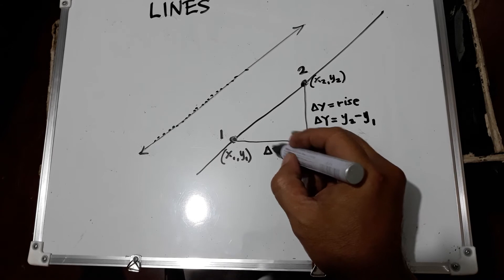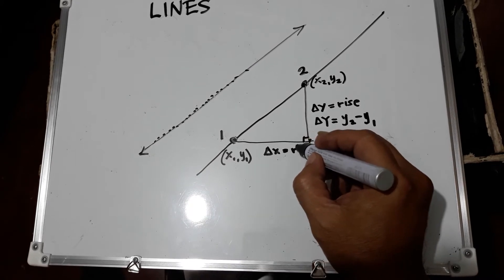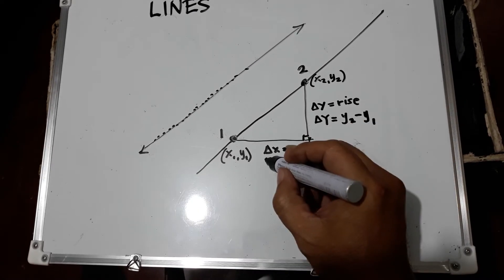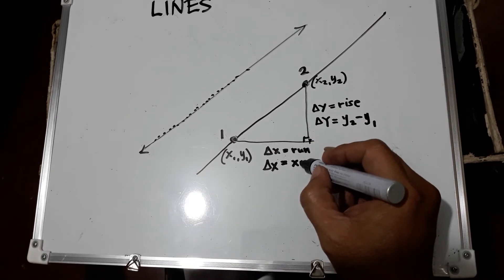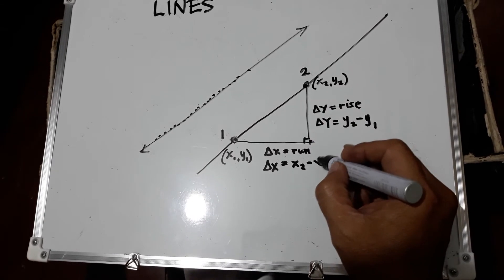This one is called delta x, also known as the run. Delta x is the change in x, that will be x sub 2 minus x sub 1.